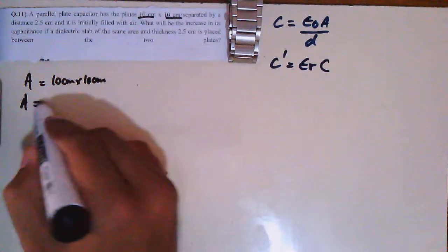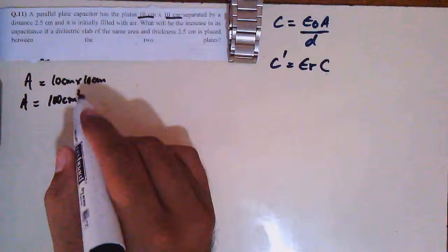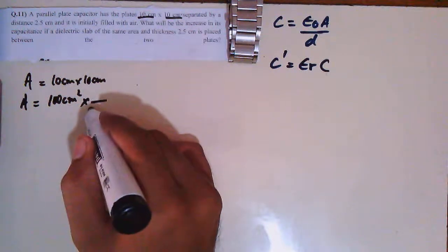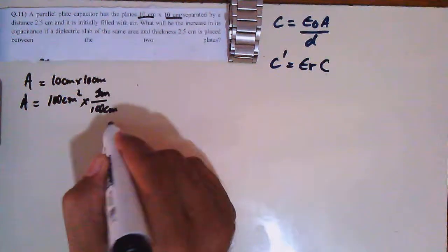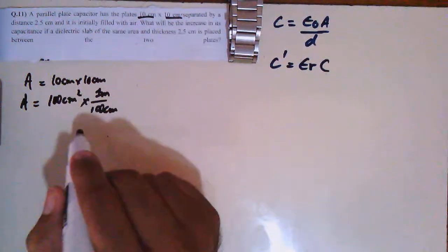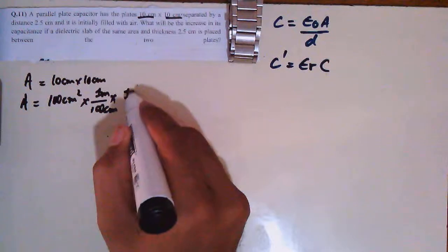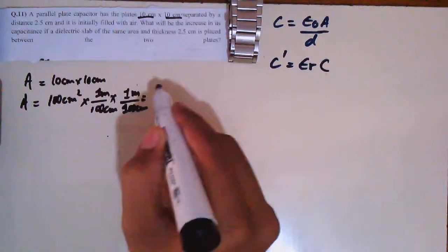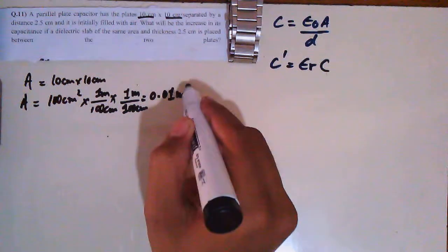So this area is 100 cm². Since cm² is not the SI unit in physics, we need to convert it. There are 100 cm in 1 meter. You need to apply this conversion factor twice — once to cancel each cm — giving 0.01 meter square.